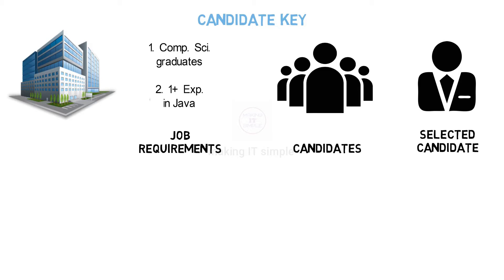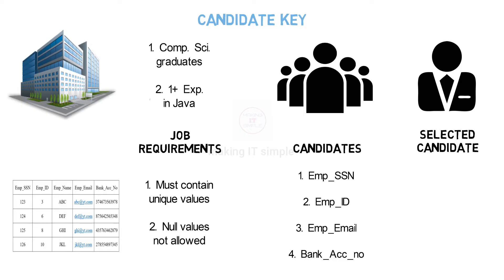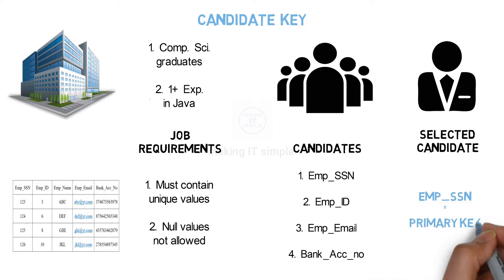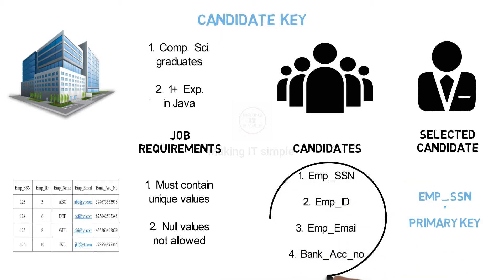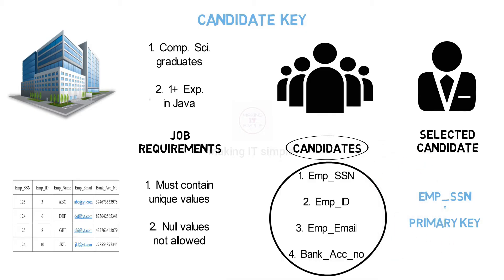Now consider this situation in a database. There is a single primary key present in the table. For a key to become a primary key there are some requirements. In a database table there will be more than one key fulfilling those requirements, but only one will be selected as primary key. These keys fulfilling the requirements to become a primary key are candidates for primary key, so they are called candidate keys.